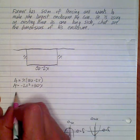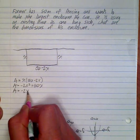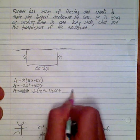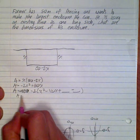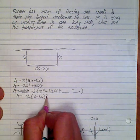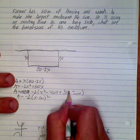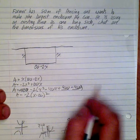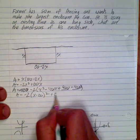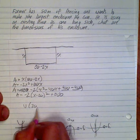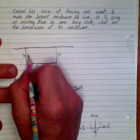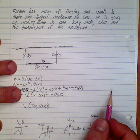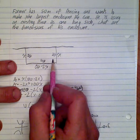We complete the square by factoring out negative 2, giving us: negative 2 times (x squared minus 40x). Half of 40 is 20, and 20 squared is 400. This becomes negative 2 times (x minus 20) squared, and when the 400 comes out it becomes plus 800. So the vertex is (20, 800), meaning the dimensions are 20 by 40, and 20 times 40 is 800 square meters — the maximum area.